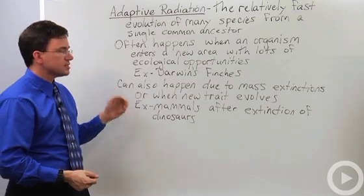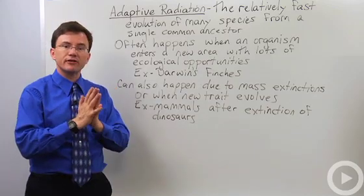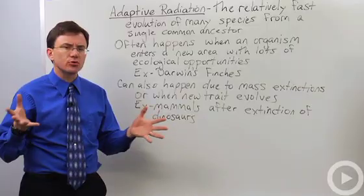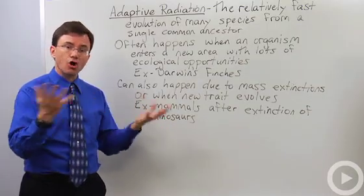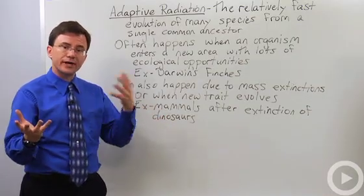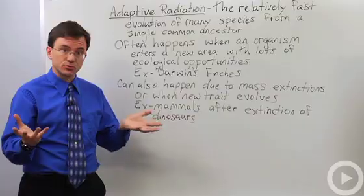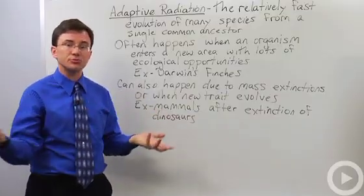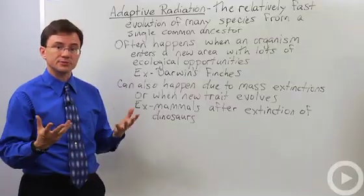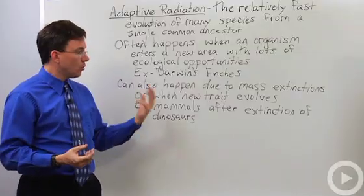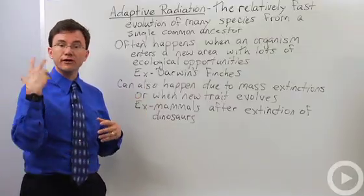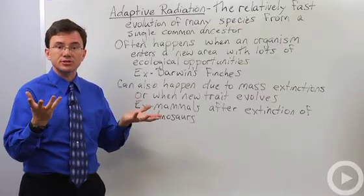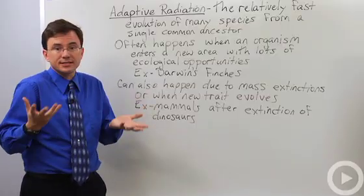Another way this commonly happens is when a mass extinction event wipes out a large number of organisms, leaving open whatever ecological roles those now-extinct animals were filling and allowing other animals to take their place and exploit new resources that hadn't been exploited before. Or, alternately, when a new evolutionary trait evolves that allows new opportunities that just didn't exist before.